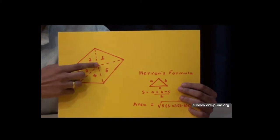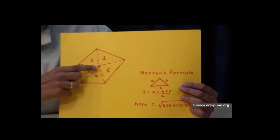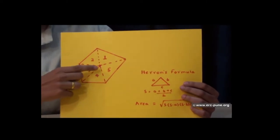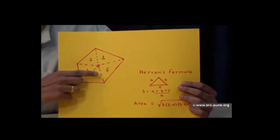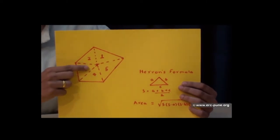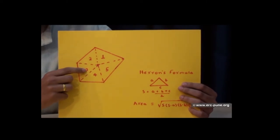So now here you will see that this pentagon breaks up into five triangles. And we will find area of each triangle, add them up, we will get area of the pentagon.